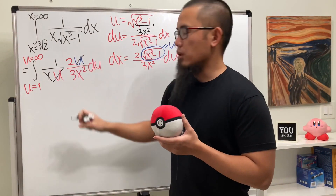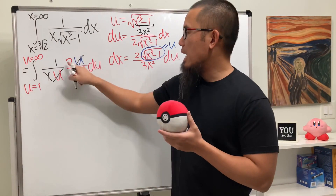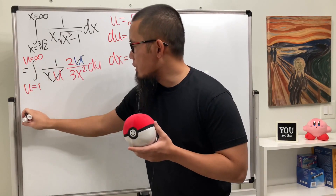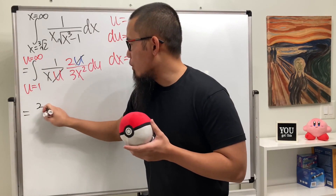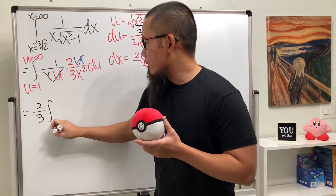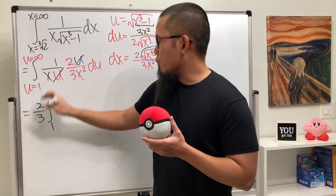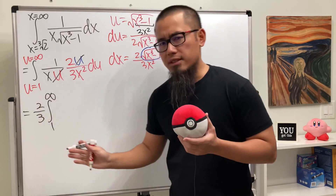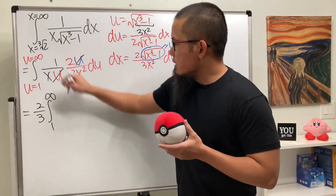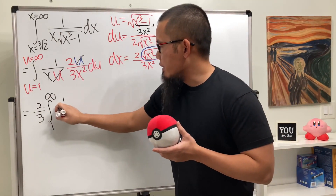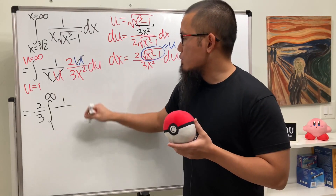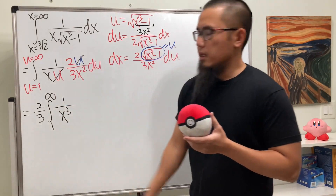The u's cancel and we pull out 2/3 on the outside. So we have 2/3 times the integral from 1 to infinity of 1/x · x² = 1/x³ dx in the u-world.